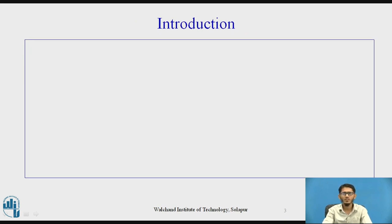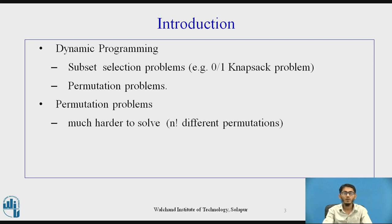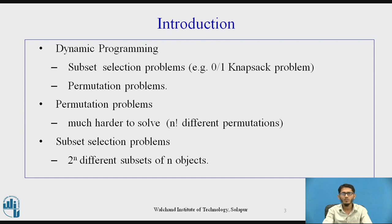First, see the introduction. Dynamic programming can be applied to subset selection problems like the 0-1 knapsack problem, and also to permutation problems. Permutation problems are generally much harder to solve, since for n number of objects there could be n factorial different permutations, whereas subset selection problems have 2 raised to n different subsets for n number of objects.